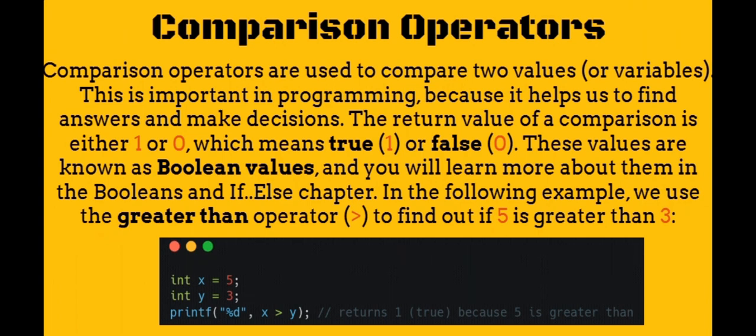Comparison operators. Comparison operators are used to compare two values or variables. This is important in programming, because it helps us to find answers and make decisions. The return value of a comparison is either 1 or 0, which means true or false. These values are known as boolean values, and you will learn more about them in the booleans and if-else chapter.